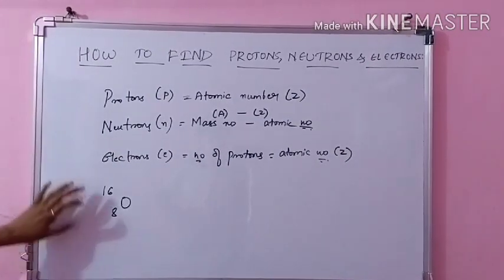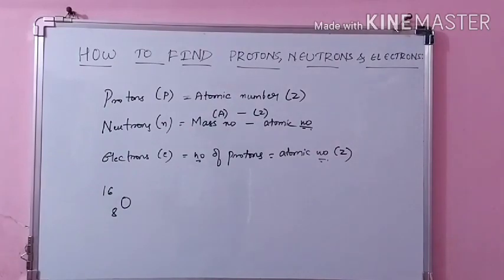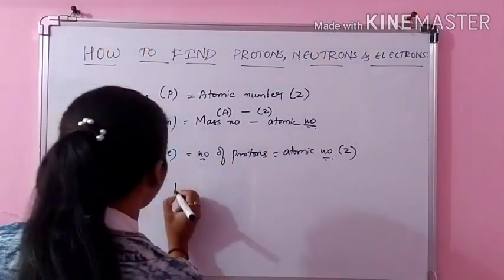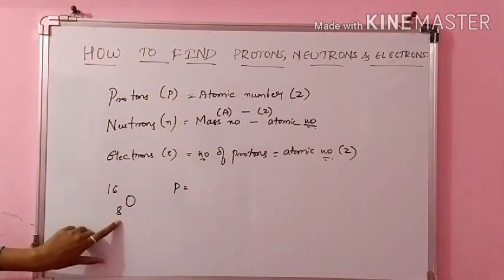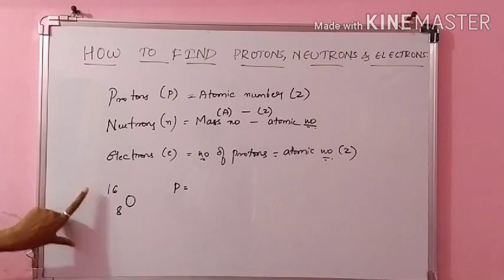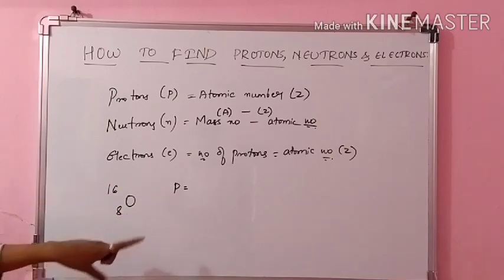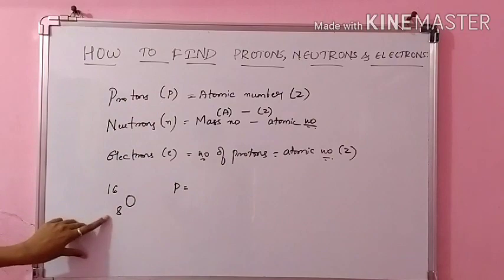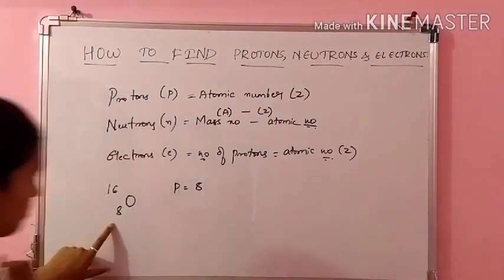For this example, we will try to find protons, neutrons and electrons. This is the atomic number, this is the mass number, and this is the oxygen atom. So protons means we find the atomic number. Here the atomic number is 8, so protons will also be 8.